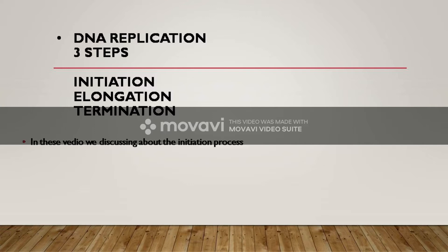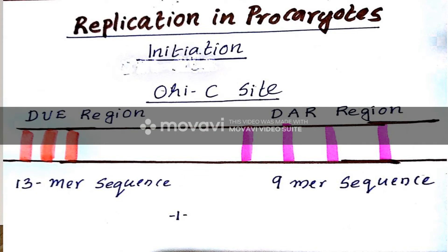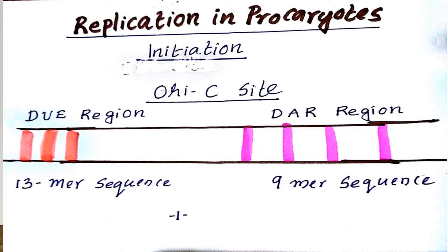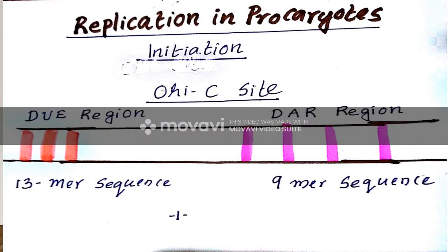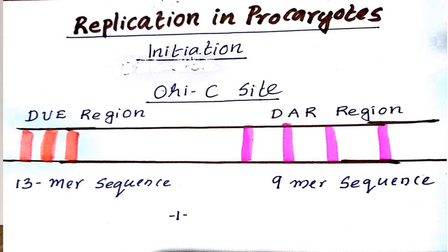In prokaryotes, as you can see in this picture, DNA replication starts from a specific site called the OriC site. The OriC site consists of three 13-mer sequences and four 9-mer sequences. The 13-mer sequences consist of thirteen base pairs and the 9-mer sequences consist of nine base pairs.